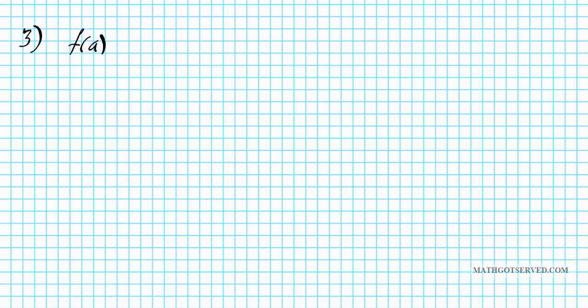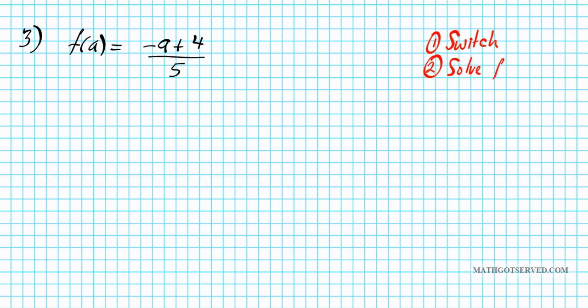Let's take a look at another example, question number three. What if we have the function f of a equals negative a plus four divided by five? This is a linear function because the variable a is first degree and is in the numerator. To find the inverse we'll use our two steps, and the inverse in this case is f to the negative one of a.